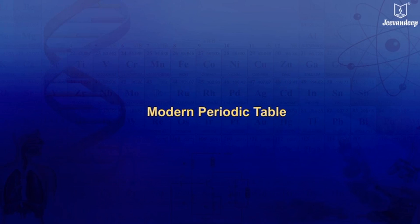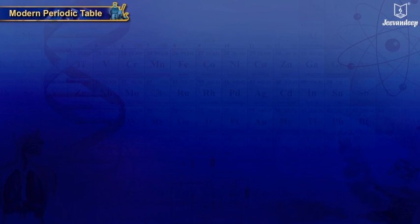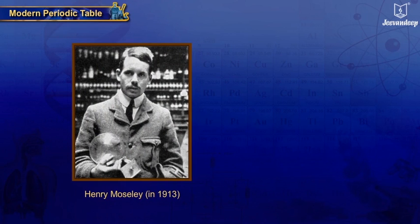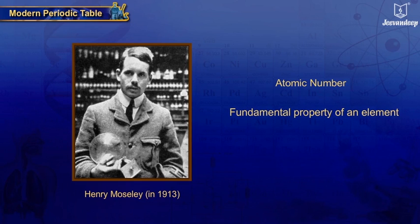Modern Periodic Table. In 1913, Henry Moseley, an English physicist, discovered that the atomic number and not the atomic mass is the most fundamental property of an element.